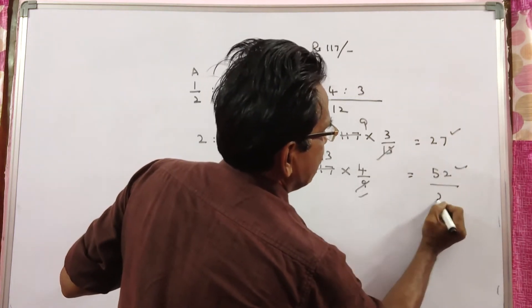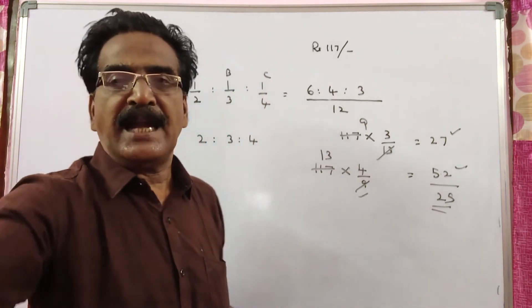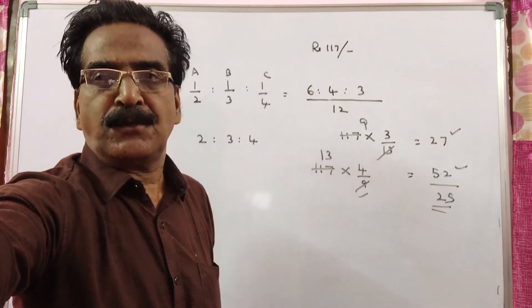So 52 minus 27 equals 25. So C gains the most, and rupees 25. Okay friends, thank you.